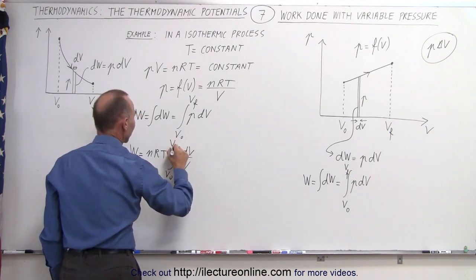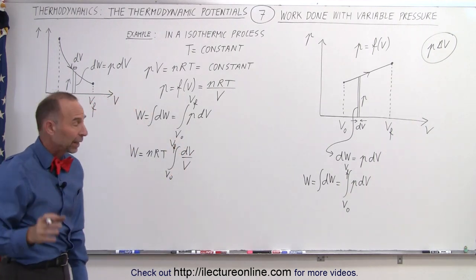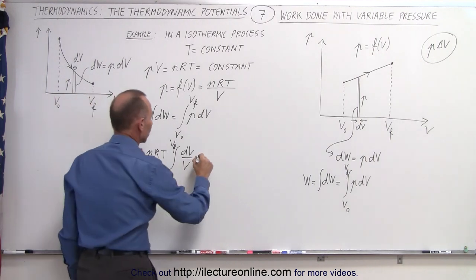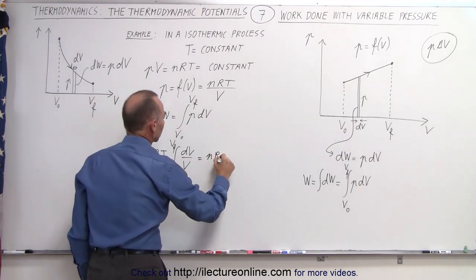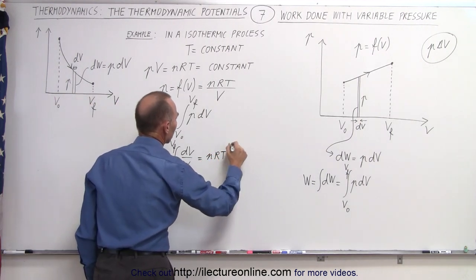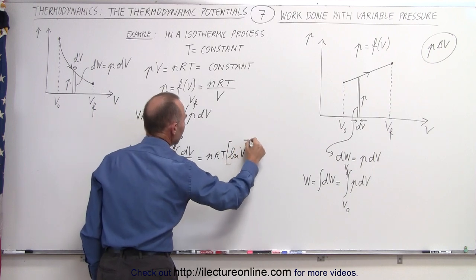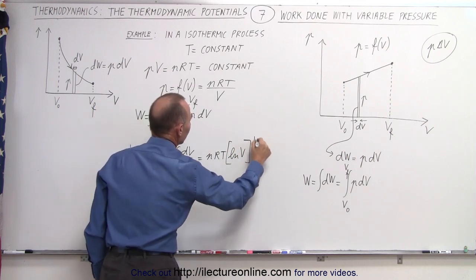And of course, we recognize that the integral of that would be the natural log of V. So this is equal to nRT times the natural log of V from V initial to V final.